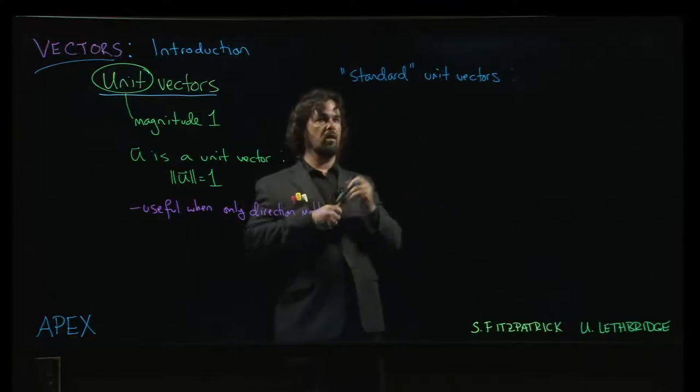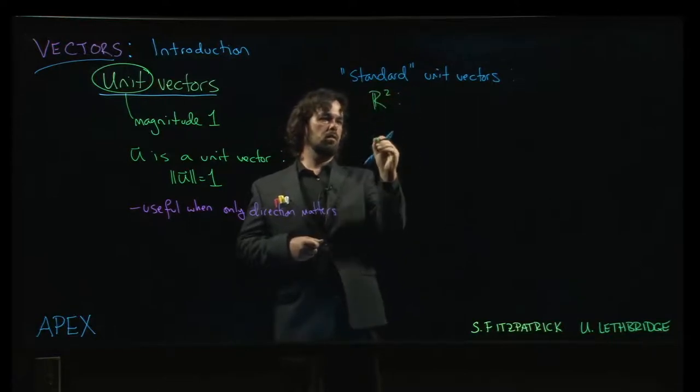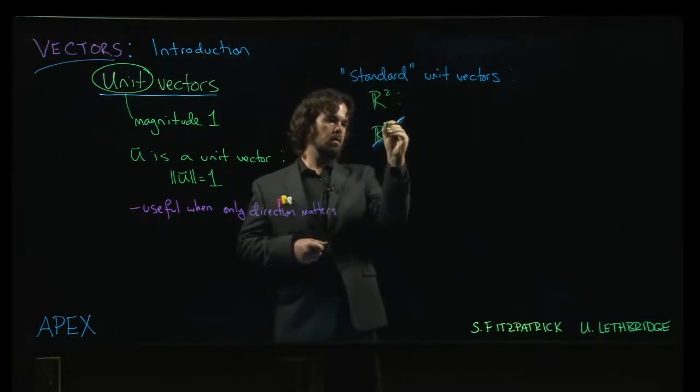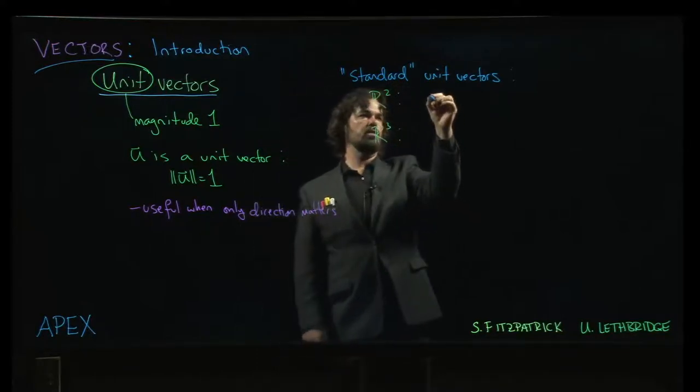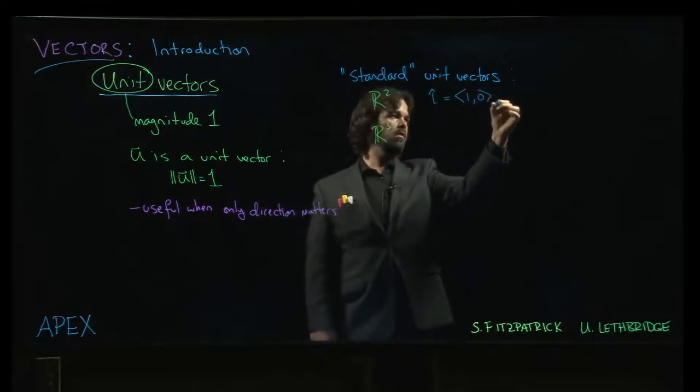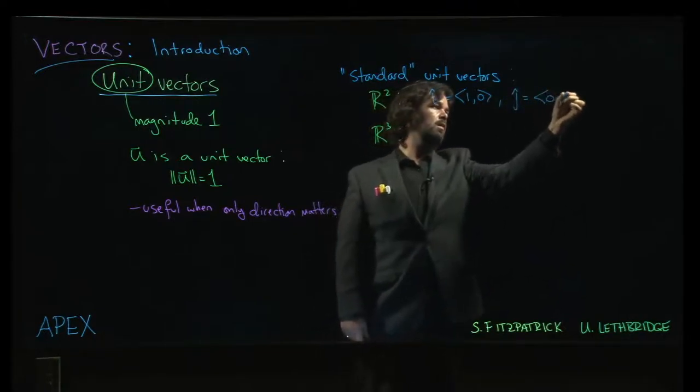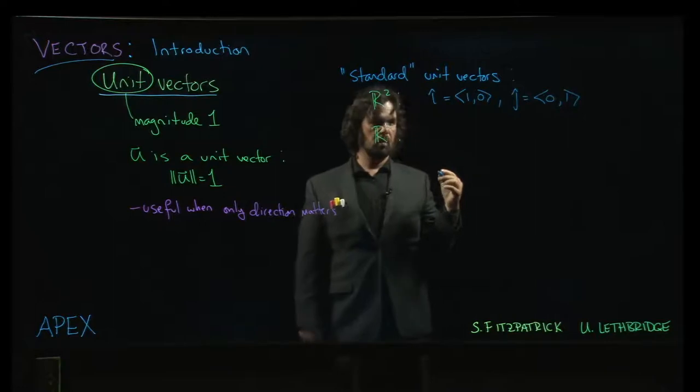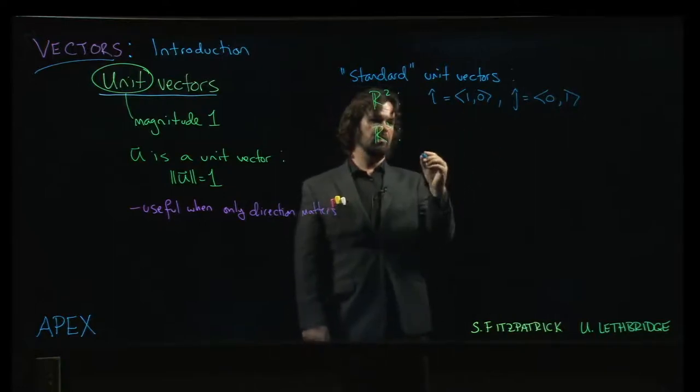So the standard unit vectors, depending on whether you're in R2 or R3—in R2 there are two standard unit vectors called i, which is the vector (1, 0), and the vector j, which is (0, 1). And it's pretty easy to confirm that both of those do indeed have magnitude 1.